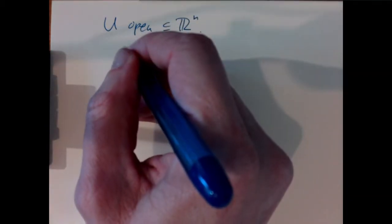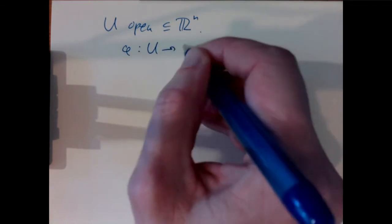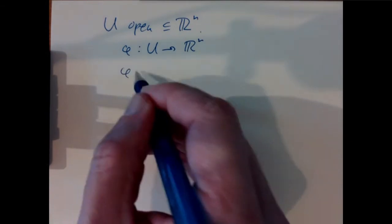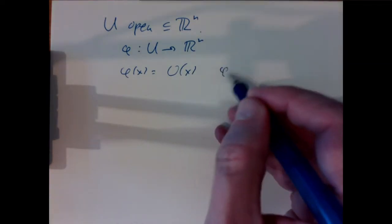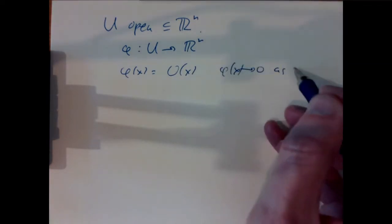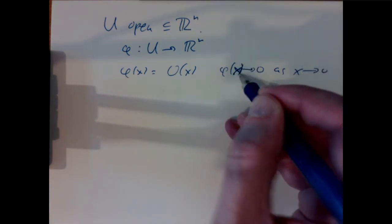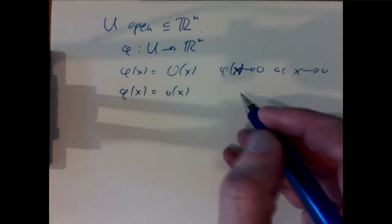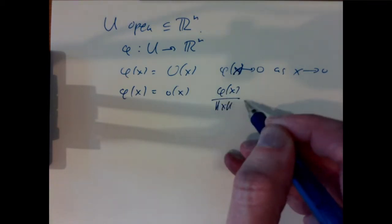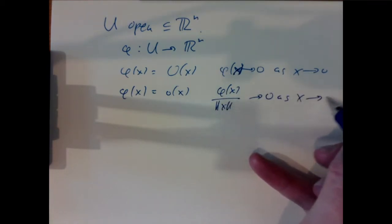Suppose that U is an open set in Rⁿ, and we take a map φ from U to Rⁿ. We say that φ(x) is big-O of x to mean that φ(x) goes to 0 as x goes to 0, and that φ(x) is little-o of x to mean that φ(x) divided by the norm of x goes to 0 as x goes to 0.